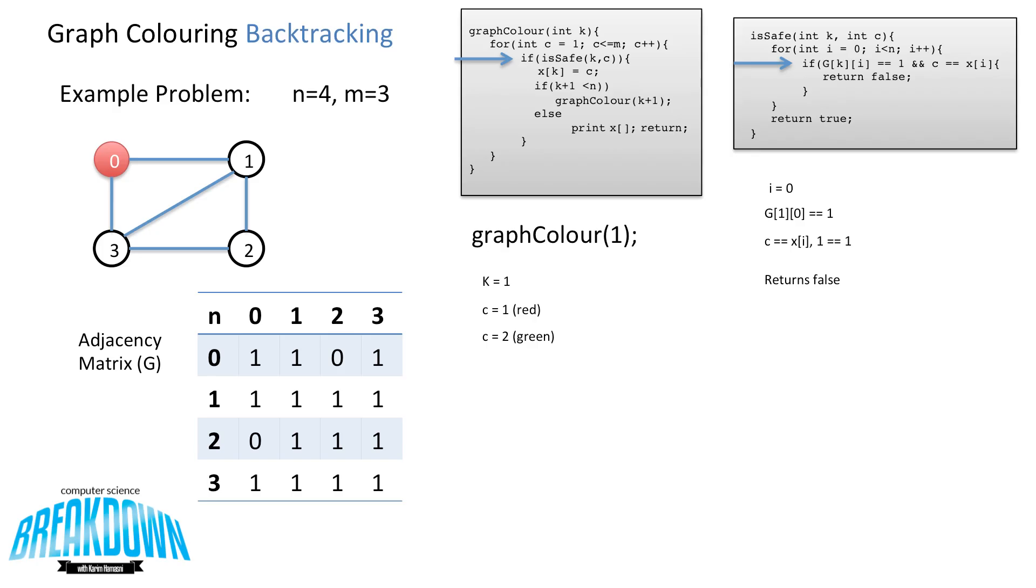So going back to the graph color function on the left hand side, we now iterate the loop once more. So C is equal to 2. So we're going to attempt to place 2 in the position node 1. And we check to see if that's safe. And needless to say, it returns true. It is safe to place the green, because it is not adjacent to any other green nodes. In fact, we don't even have green on the board yet. So it'll set X[K] equal to C. So since K is 1, it'll set X[1] equal to 2, which is our value for C, which will color in that first node as green. It'll once again check to see if K plus 1 is less than n. So in this case, 2 is less than n. So it'll recursively call graph color K plus 1, and try to set node 2 in the next iteration. And it'll repeat this process in a recursive way until all the nodes are filled.